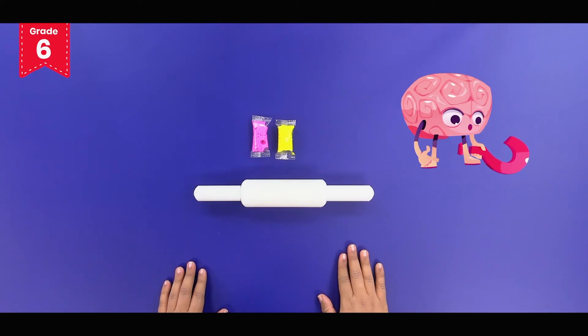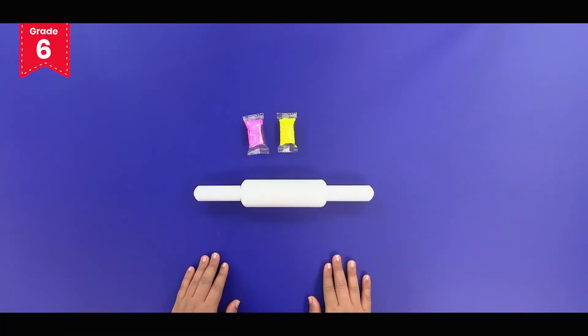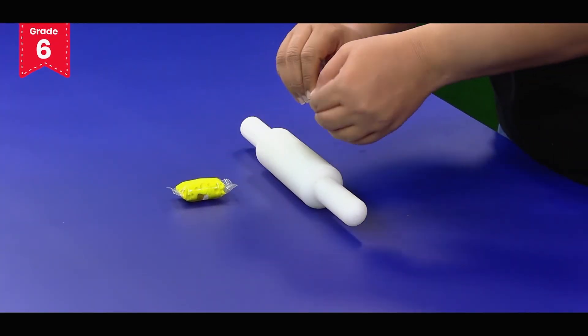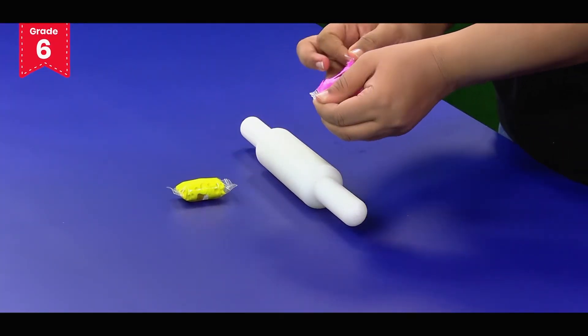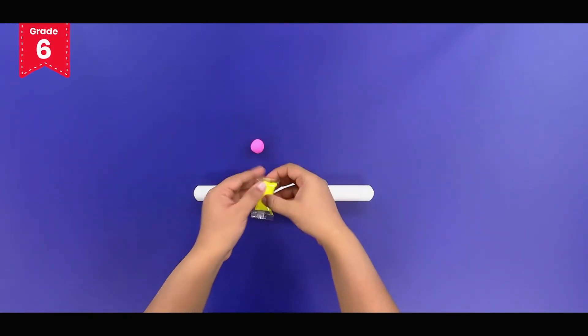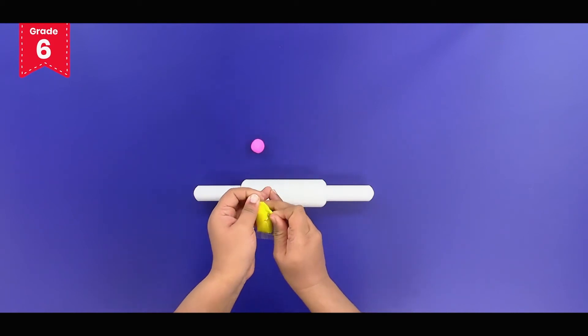Can you tell where do we use this rolling pin? Take out the clay from the packet and roll it into a ball. Then do the same with the other clay packet.